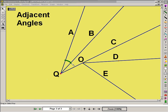So we see angle AQB and angle BQC. They share the same vertex Q and they share a common side QB. Here we also see some adjacent angles. Angle COD is adjacent to angle DOE. They share a common vertex O and a common side.